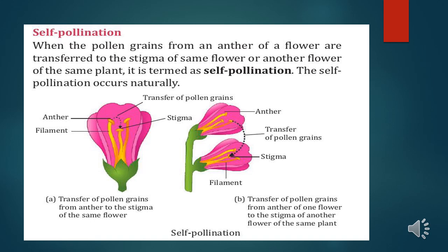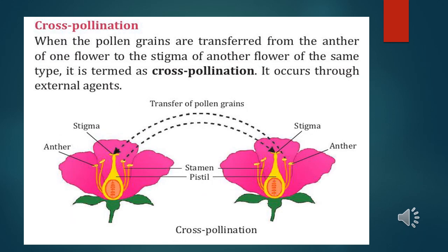Cross-pollination is when pollen grains are transferred from the anther of one flower to the stigma of another flower of the same type — it is termed as cross-pollination. It occurs through external agents, unlike self-pollination which occurs naturally. In cross-pollination we need external agents. You can see in the figure the transfer of pollen grains from one flower to another flower via stigma.